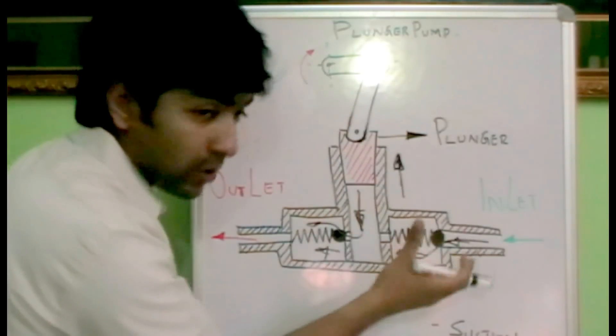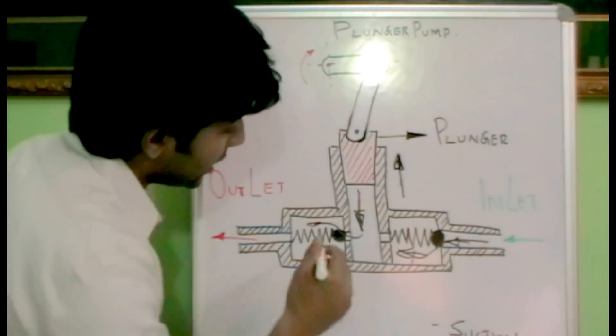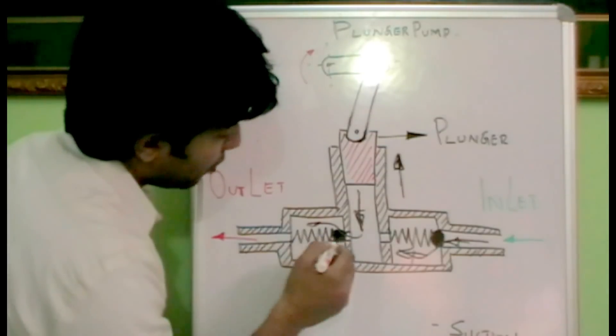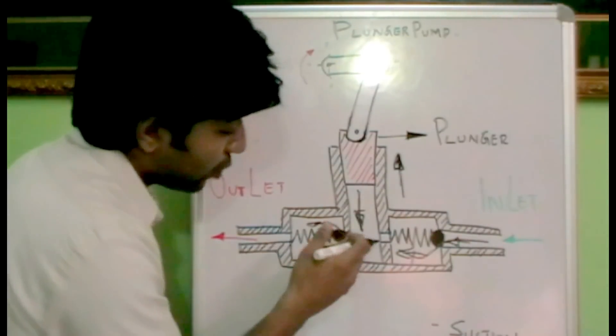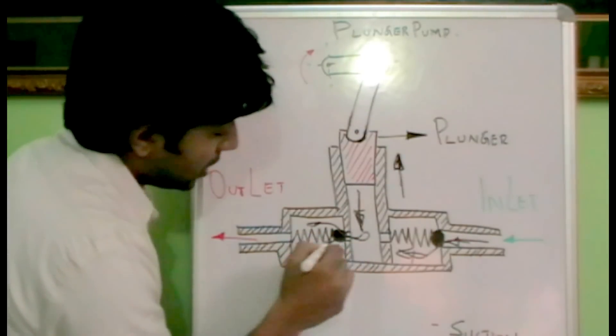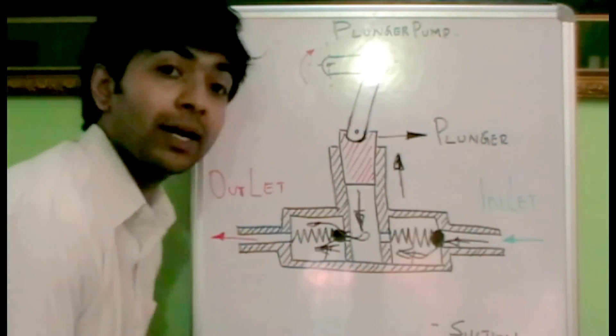As the plunger moves down, the oil that was sucked is pressured outside through this port. The pressure develops and pushes this ball outside towards this port. The oil escapes through this port towards the outlet.